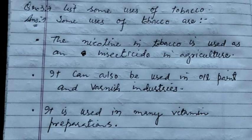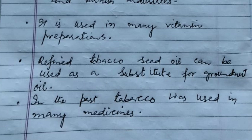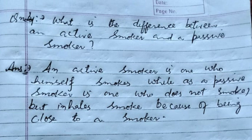Question number three: List some uses of tobacco. Answer: The nicotine in tobacco is used as an insecticide in agriculture. Second, it can also be used in oil paint and varnish industries. Third, it is used in many vitamin preparations. Fourth, refined tobacco seed oil can be used as a substitute for groundnut oil. Fifth, in the past, tobacco was used in many medicines.